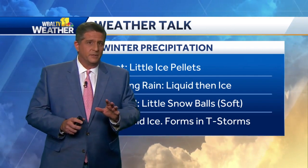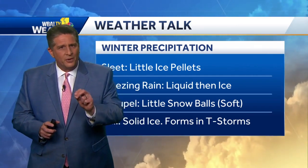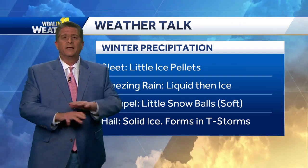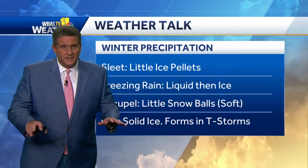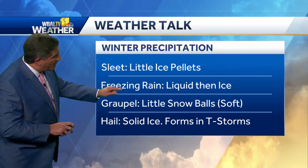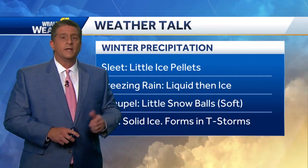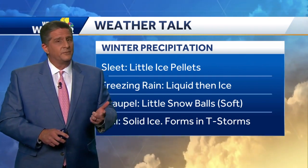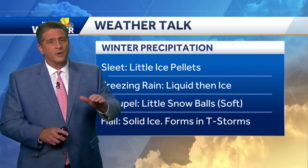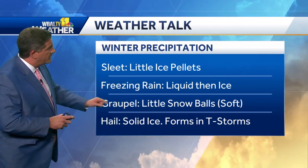Freezing rain is very deceptive. It comes down in liquid form, and then it freezes on contact, forming a glaze of ice on top of everything. So we might see both of these types of precipitation on Thursday — sleet and freezing rain. That's why we're putting up the caution sign for Thursday morning. It might even be a little snow mixed in there.